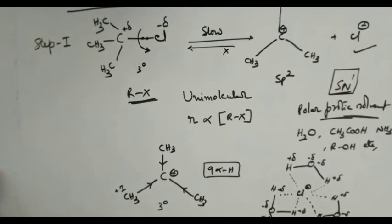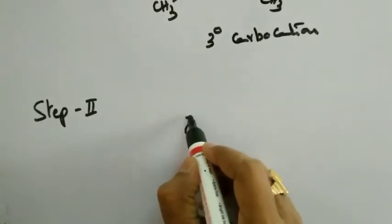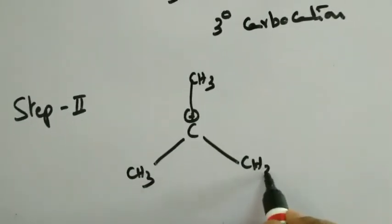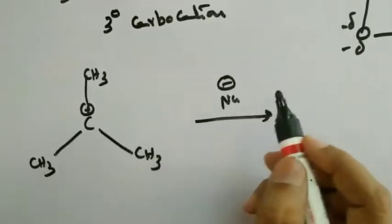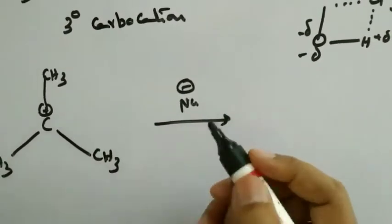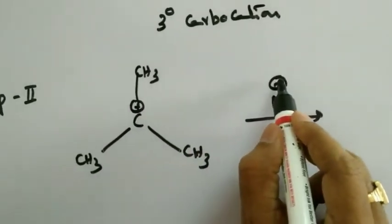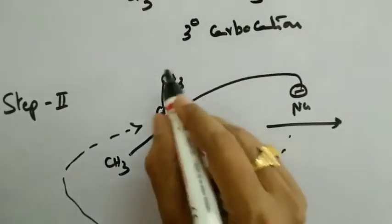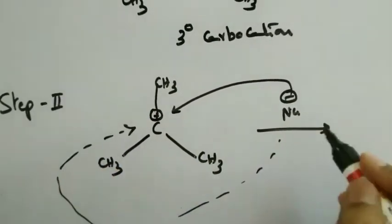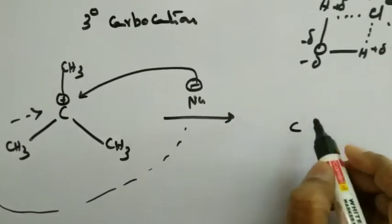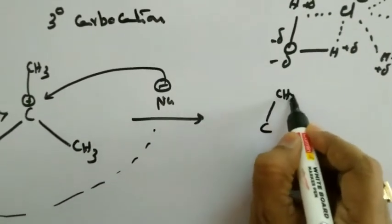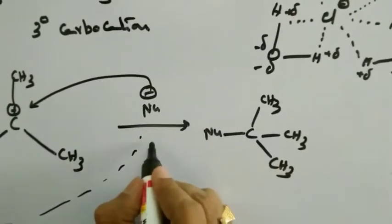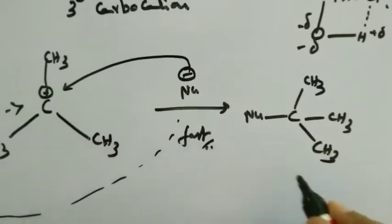In step 2, the intermediate carbocation formed in step 1 is attacked by the incoming nucleophile. This is a very fast step. The incoming nucleophile — NU⁻, which can be OH⁻, CN⁻, or even a water molecule — can attack this carbocation either from the front direction or from the back direction. Because the carbocation is a flat molecule, both front and back attacks are possible. As a result, the final product obtained is (CH₃)₃C–NU.